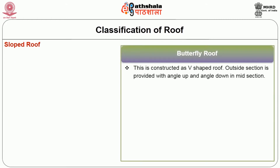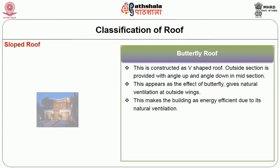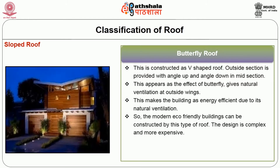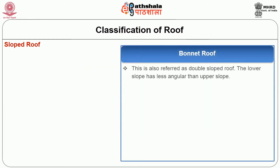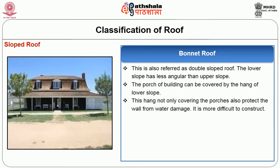The butterfly roof is constructed as a V-shaped roof where the outside sections are angled up and the mid section angles down, giving the appearance of a butterfly. It provides natural ventilation at the outside wings, making the building energy efficient. Modern eco-friendly buildings can be constructed using this type of roof, though the design is complex and expensive. The bonnet roof, also referred to as a double-sloped roof, has a lower slope less angular than the upper slope. The porch of the building can be covered by the overhang of the lower slope, which not only covers the porches but also protects the wall from water damage. It is more difficult to construct.